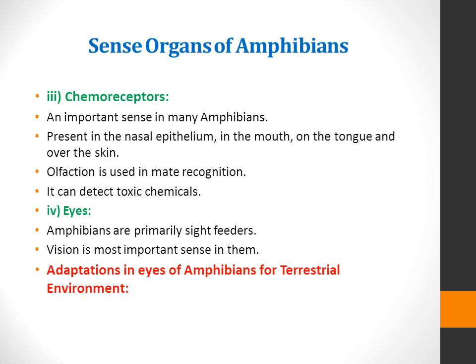The fourth sense organ is the eyes of amphibians. Amphibians are primarily sight feeders, so vision is the most important sense in them. Vision is the dominant special sense in many amphibians. Caecilians are obvious exceptions since they are mostly blind because their eyes are partially covered by skin. Several modifications of ancestral aquatic eyes serve to adapt them for use in air. Lacrimal glands and eyelids keep the eyes moist.